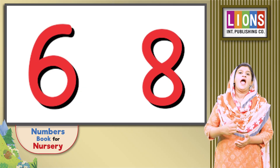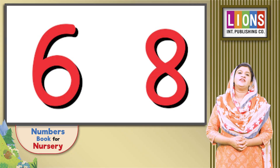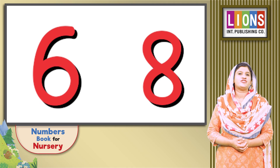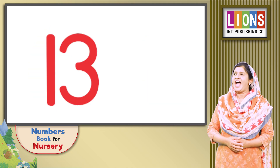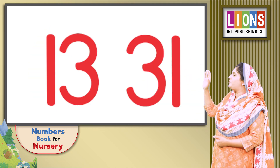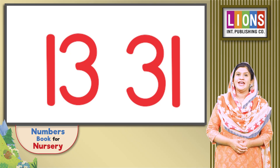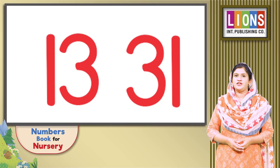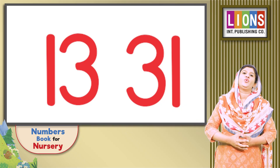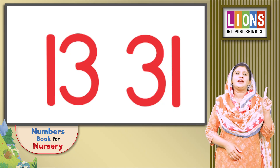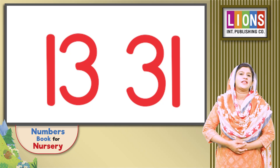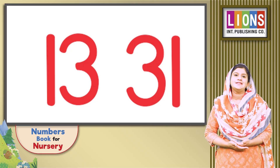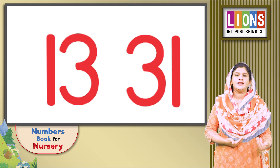We are going to see the greater or bigger number and the smaller number. Here is a tricky one: if I have 13 and 31, can you tell me which one is greater? 31 is greater, because three tens and one unit make 31, and one ten and three units make 13. So 31 is greater than 13, and 13 is smaller than 31.